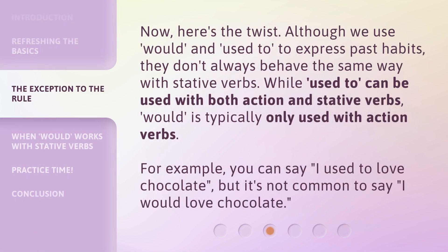Now, here's the twist. Although we use 'would' and 'used to' to express past habits, they don't always behave the same way with stative verbs. While 'used to' can be used with both action and stative verbs, 'would' is typically only used with action verbs. For example, you can say 'I used to love chocolate,' but it's not common to say 'I would love chocolate.'